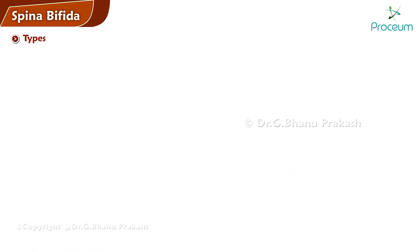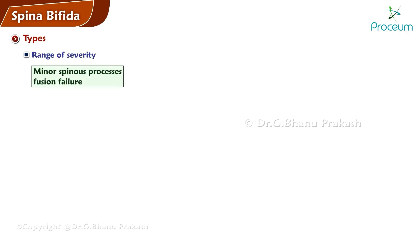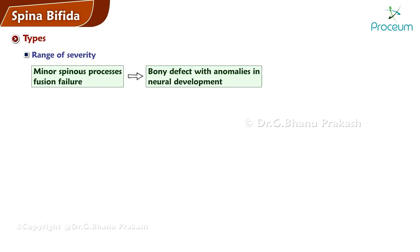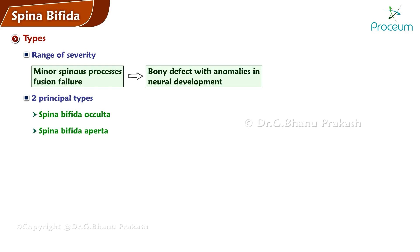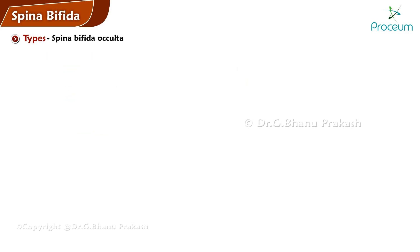Spina bifida presents a range of severity, extending from a minor failure of fusion of the spinous processes to a substantial bony defect accompanied by serious anomalies in neural development. There are two principal types of spina bifida: spina bifida occulta and spina bifida aperta. Spina bifida occulta represents the mildest and the most common form of the disorder.